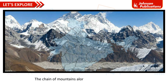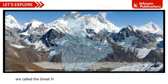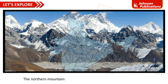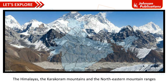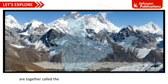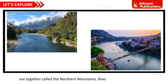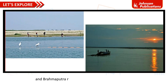The chain of mountains along the northern parts of India are called the Great Himalayan Mountains. These are snow-capped mountains. The northern mountains extend from northwest to northeast of India. The Himalayas, the Karakoram Mountains, and the northeastern mountain ranges are together called the northern mountains. Rivers like the Ganga, Yamuna, and Brahmaputra rise here and flow down to the plains.